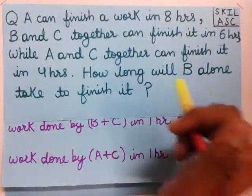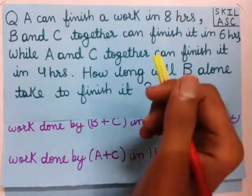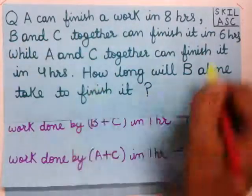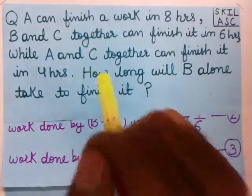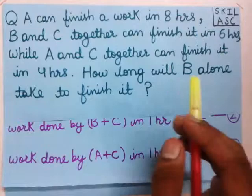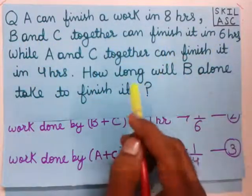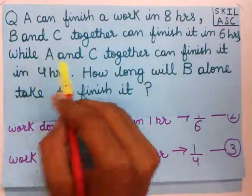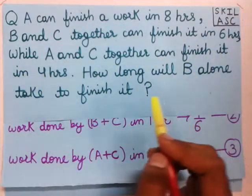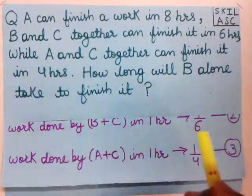Welcome to learn about time and work. The question is: A can finish a work in 8 hours, B and C together can finish it in 6 hours, while A and C together can finish it in 4 hours. Then how long will B alone take to finish it?